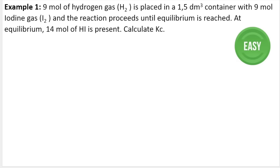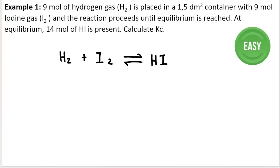Then I fill in all the given information, whether into my table or into the KC expression. And then I start working out all the different missing pieces. What's key to remember is that the change in moles row in your table works in conjunction with the mole ratio. So we're going to start with a level easy example. We've got hydrogen reacting with iodine. As the reaction proceeds, it reaches equilibrium, and the product is HI. To balance it, I need to put a two in front of HI.